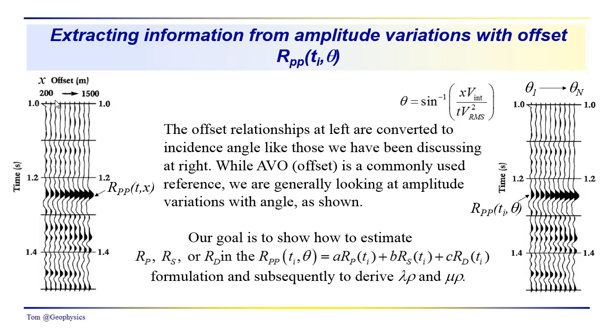We have to convert these offsets into incidence angles, which we could refer to as angles theta 1 through theta n, and we can use a relationship like this which Russell refers to.